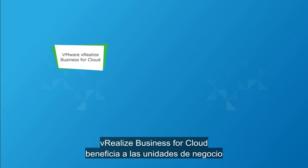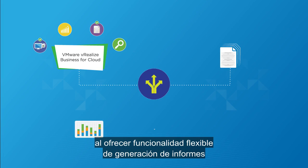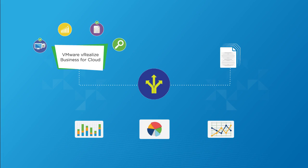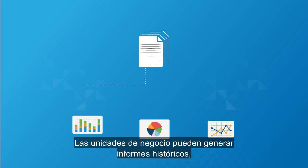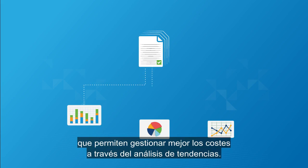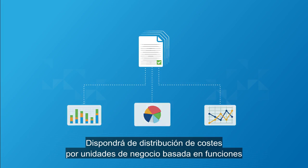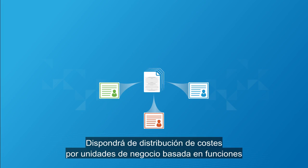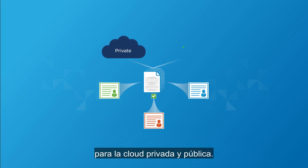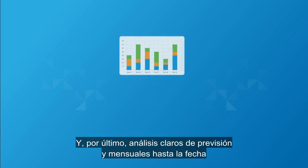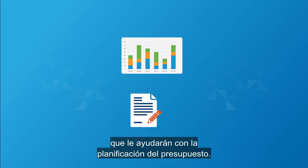vRealize Business for Cloud benefits line of business by providing flexible reporting capabilities with greater user controls. Line of business can generate historical reporting, which allows better cost management through trend analysis. You get role-based line of business showback across private and public cloud. And finally, clear month-to-date and projection analysis helps with budget planning.